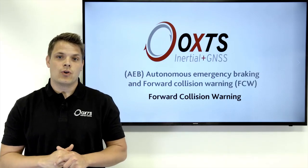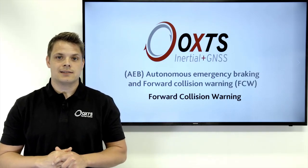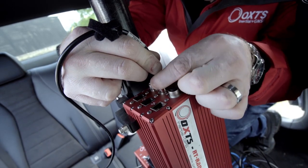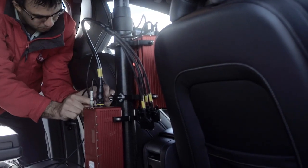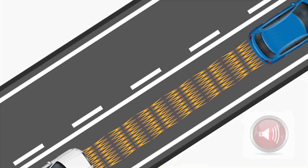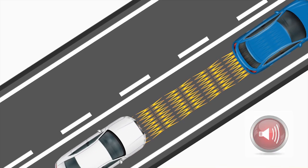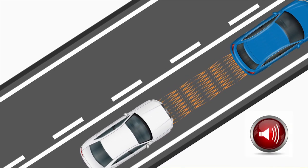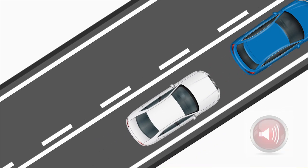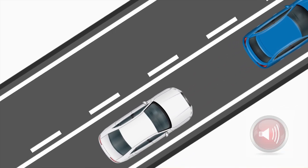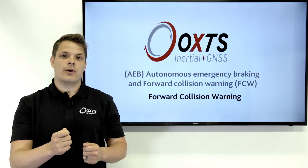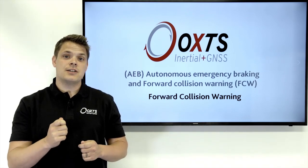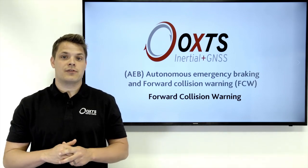For the forward collision warning ADAS tests, we're using an RT in our test vehicle. We're interested not only in the position and time to collision before we hit our target, but also the precise time that the collision warning alert came on in our vehicle. The RT is logging speeds and position data, as well as that time point that we use as a synchronization point in our test report afterwards.